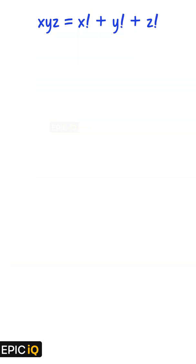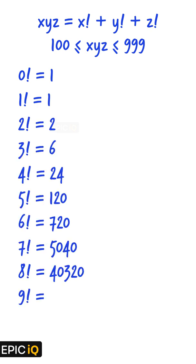Let us first discuss the factorial problem. xyz is a 3-digit number between 100 and 999. Let us write down each of these factorials. We notice that the number 7 factorial is a 4-digit number. Since the number xyz is a 3-digit number,